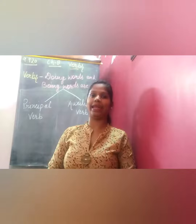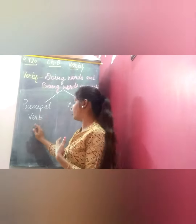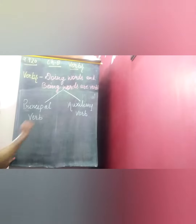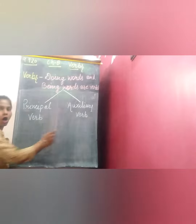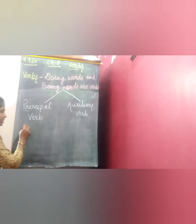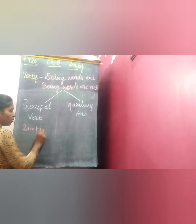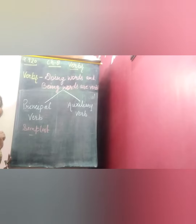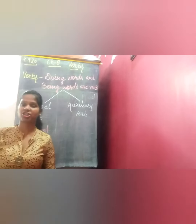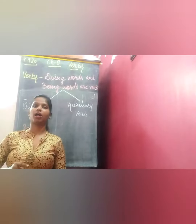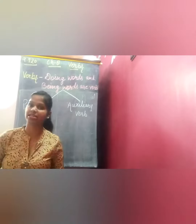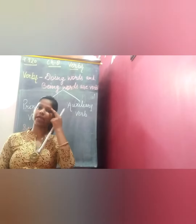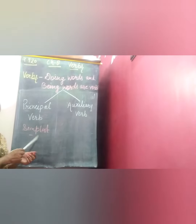Now, verbs are divided into two broad categories. One is principal verb and another one is auxiliary verb. Principal verb is the most simplest form of verb. All the verbs are made with the principal verb by adding a suffix in it.